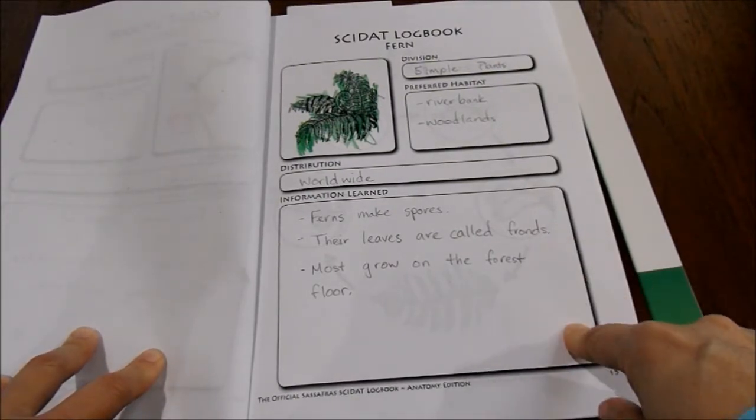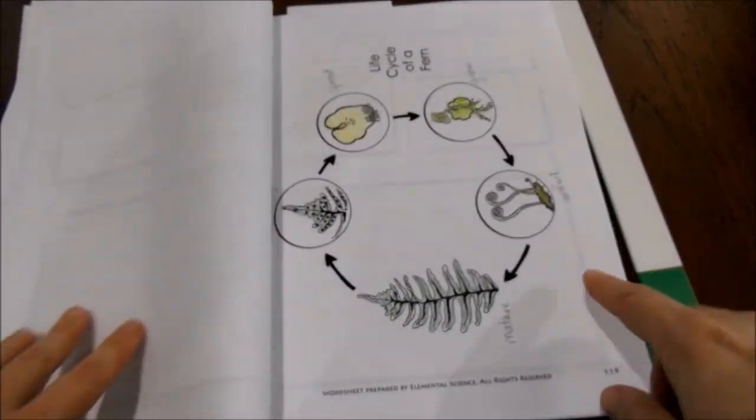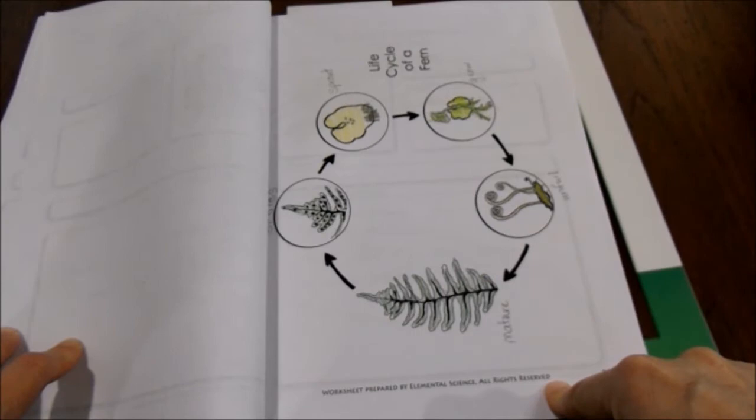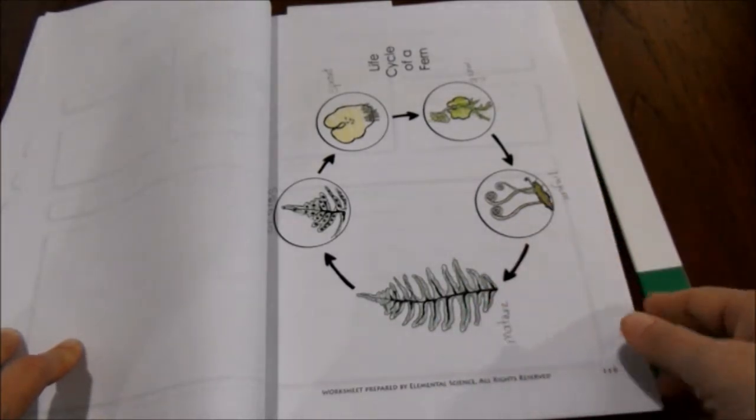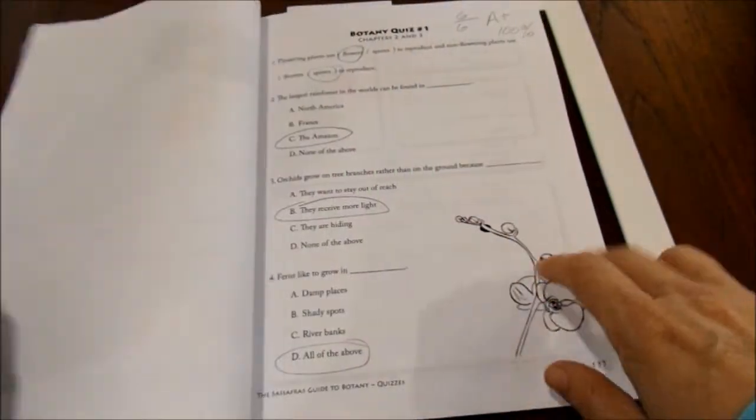And then on our fourth day we would do an extra activity. If there was a sheet for it I included it in his logbook, but if there wasn't a sheet then we wouldn't add anything to it. And then at the end of the chapter we would do a little quick quiz.